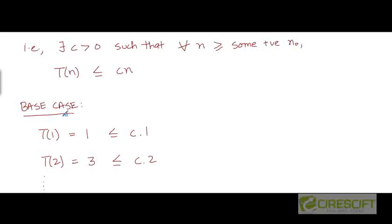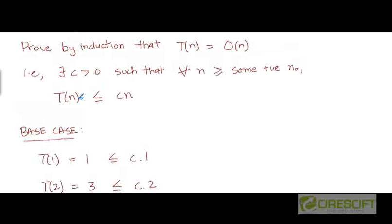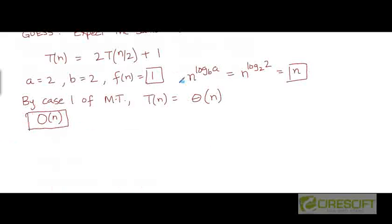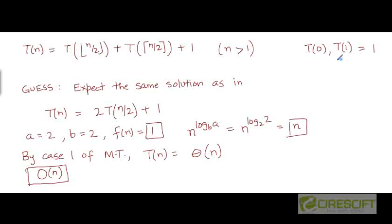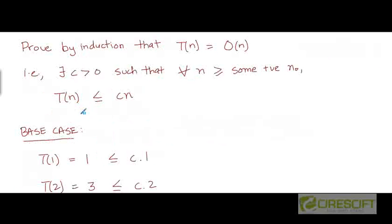Let's start by proving the base cases. For n = 1, is T(1) ≤ c·1? We are given that T(1) = 1, so the left-hand side is 1 and the right-hand side is c·1. This inequality holds if c ≥ 1.